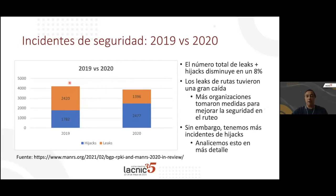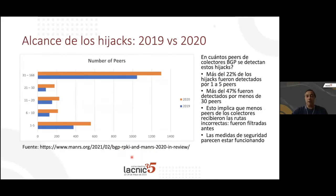Comparing 2019 and 2020, leaks and hijacks combined are reduced by 8%. Leaks went significantly down, which means more organizations adopted actions to improve routing security, but apparently there are more hijacks now. This data source is MANRS, and there's an article you can download.